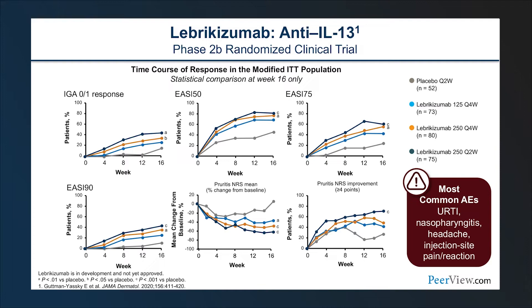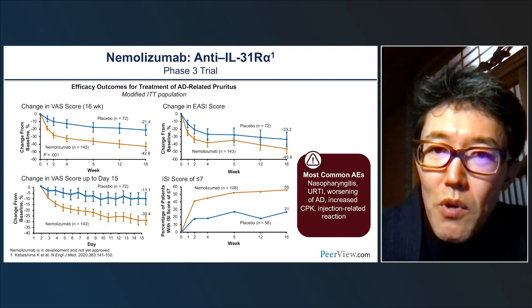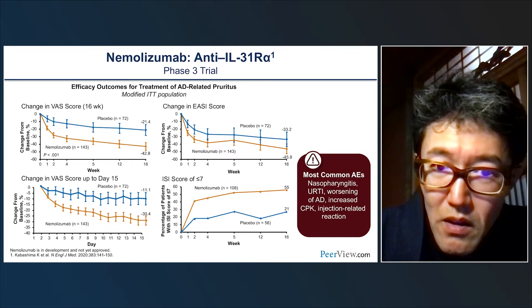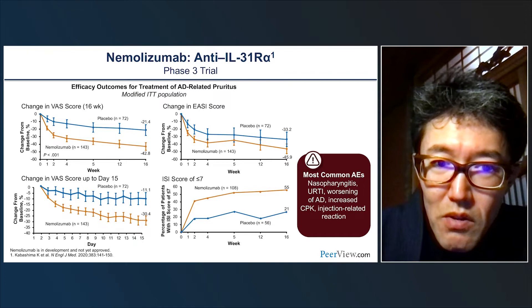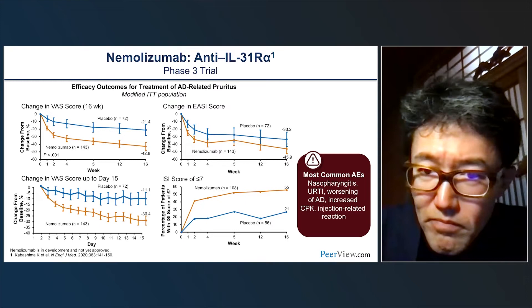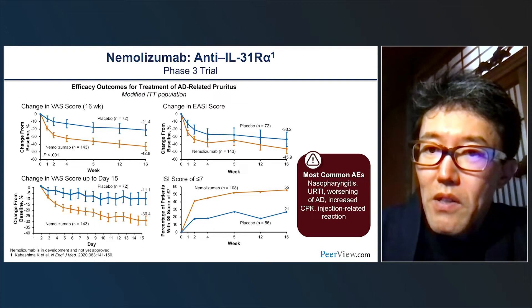Another biologic targets the IL-31 receptor: nemolizumab. In a phase 3 clinical trial in a modified ITT population, targeting IL-31 achieved a 42.8% decrease in Peak Pruritus NRS scratch score compared to 21.4% with placebo. Change in NRS score at day 15 was 30.4% in the nemolizumab group.